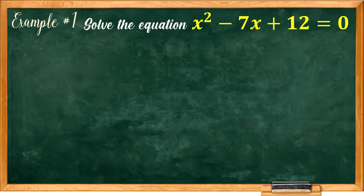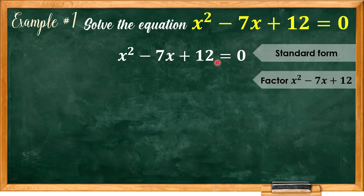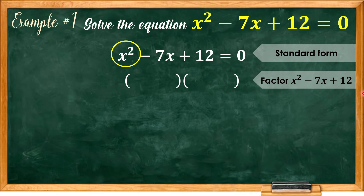We will now get the solution of the equation x squared minus 7x plus 12 is equal to 0. First, it must be written in standard form: x squared minus 7x plus 12 equals 0. We will find the factors of x squared minus 7x plus 12. The factors of x squared are simply x times x.